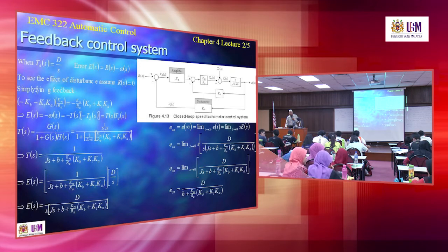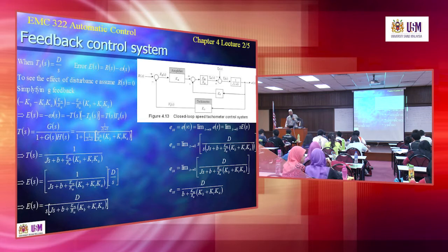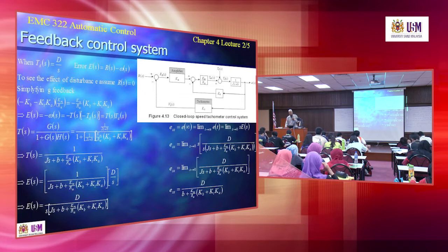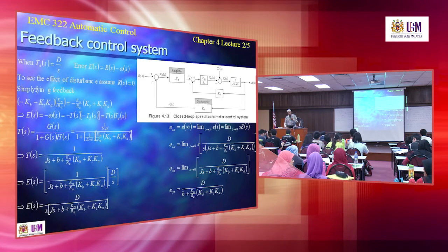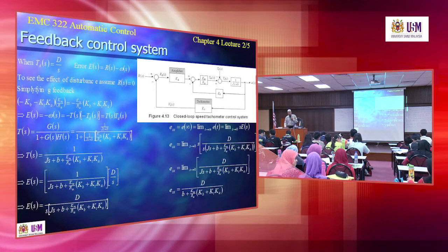To find the steady state error, we use the final value theorem - we don't need to transform to the time domain, we can leave it in the S domain. Applying the limit as S approaches zero, we substitute S into the error equation. The S terms in the numerator and denominator cancel out.